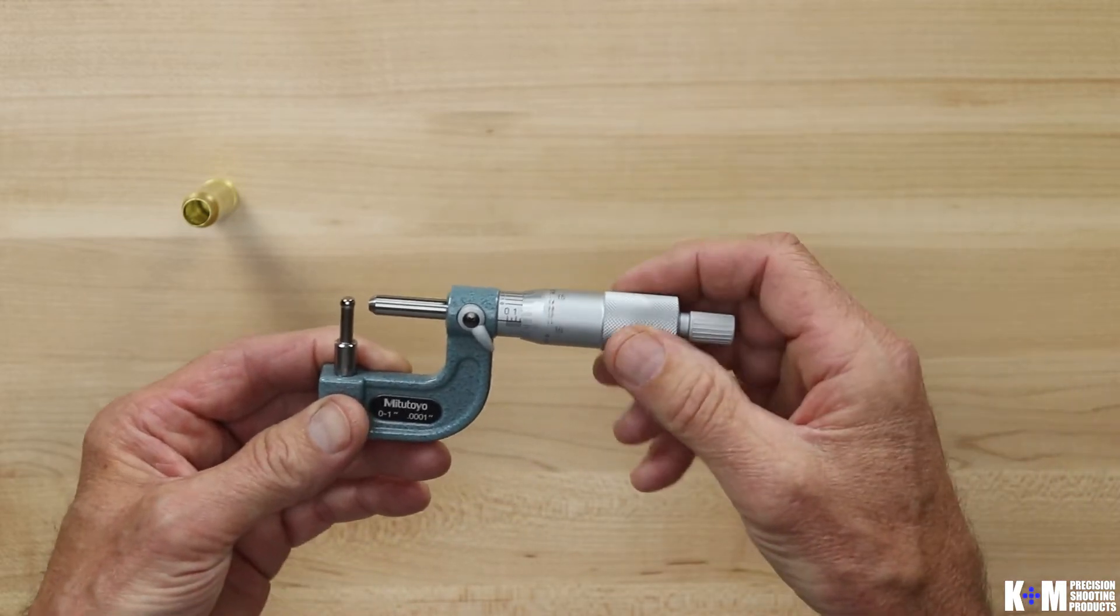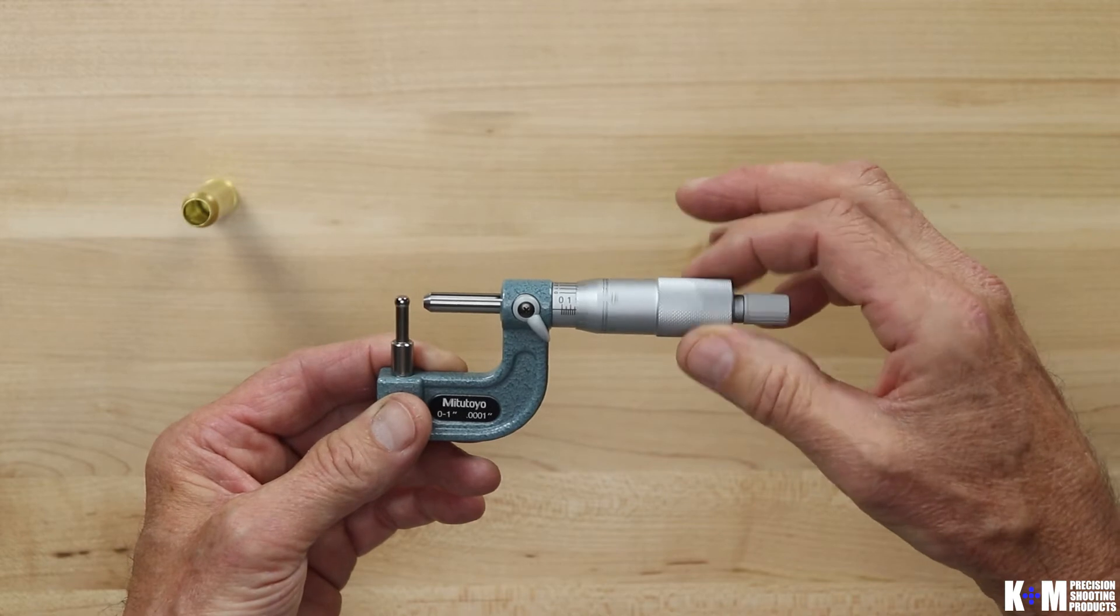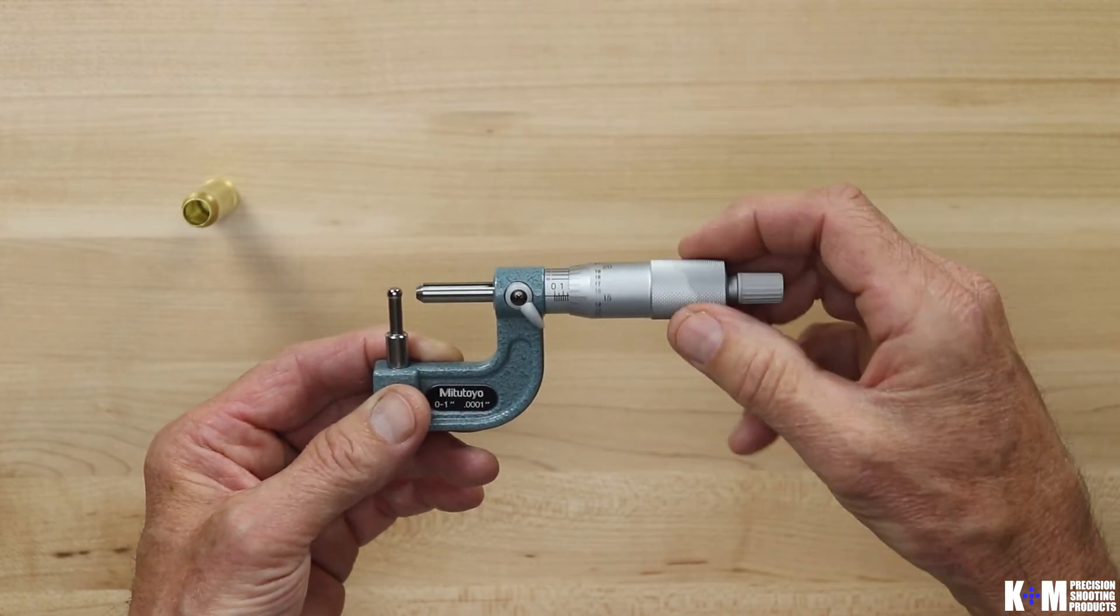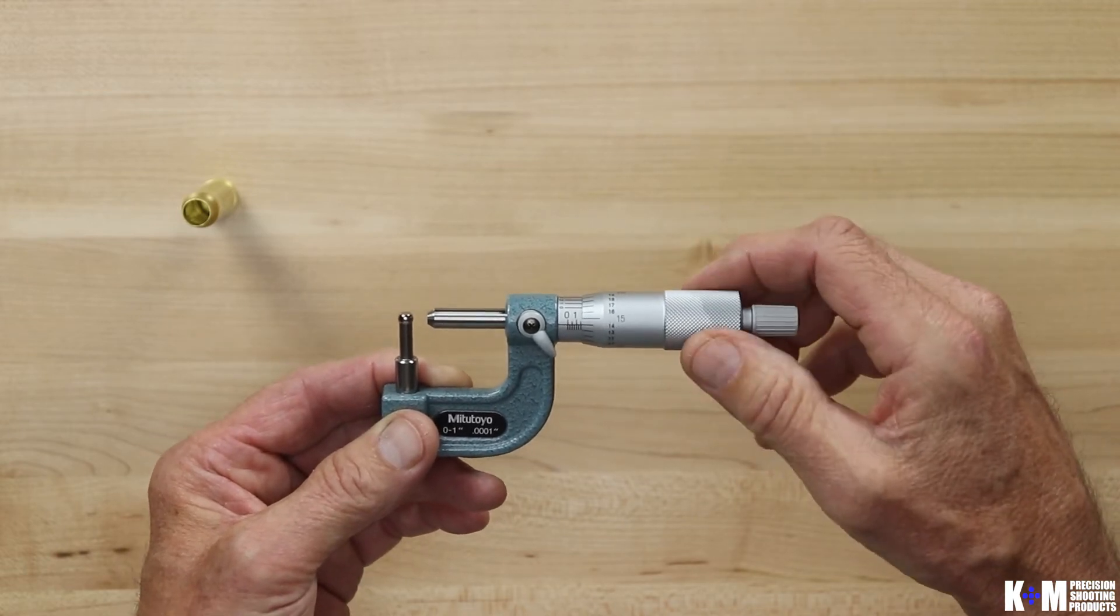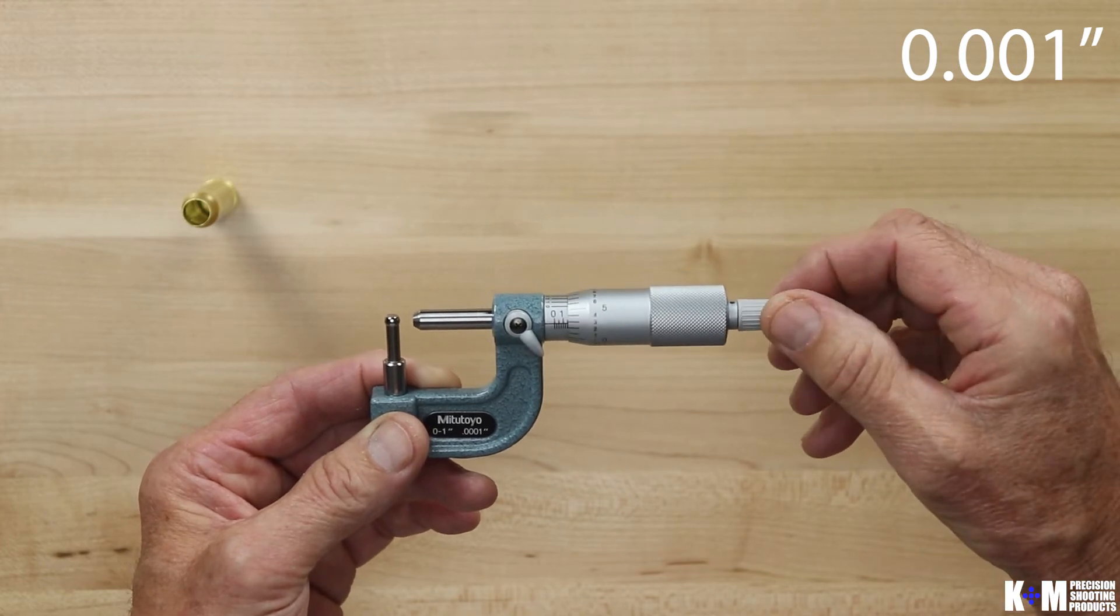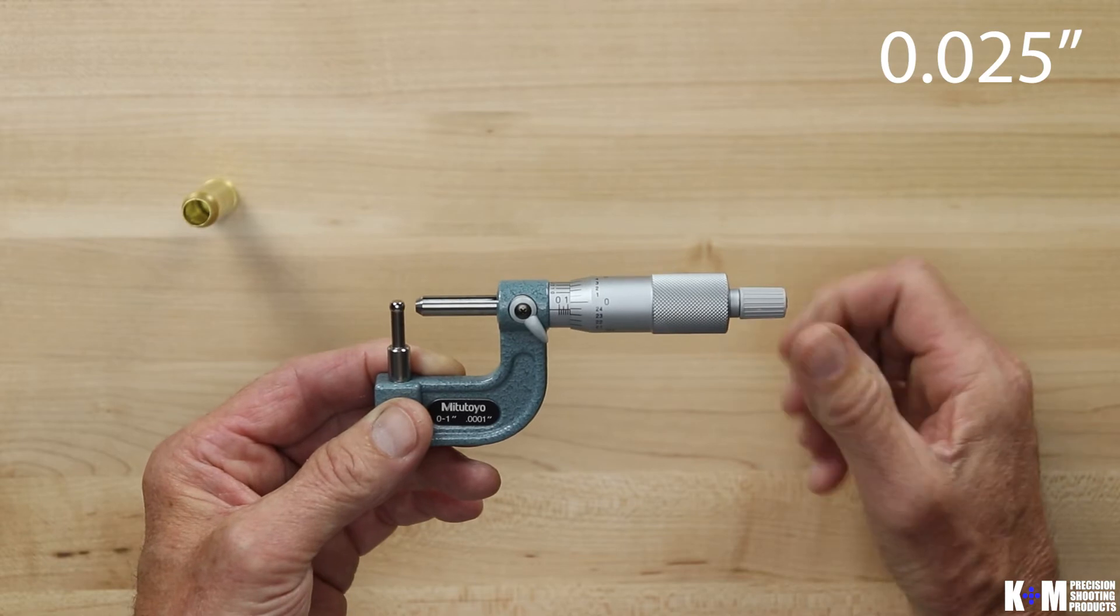Next thing we need to understand is the divisions on a micrometer and what each of those means. So first of all, the spindle has markings from zero all the way around back to zero which is 25. So each one of those is 1,000 of an inch in measurement and one revolution of your spindle is 25,000.